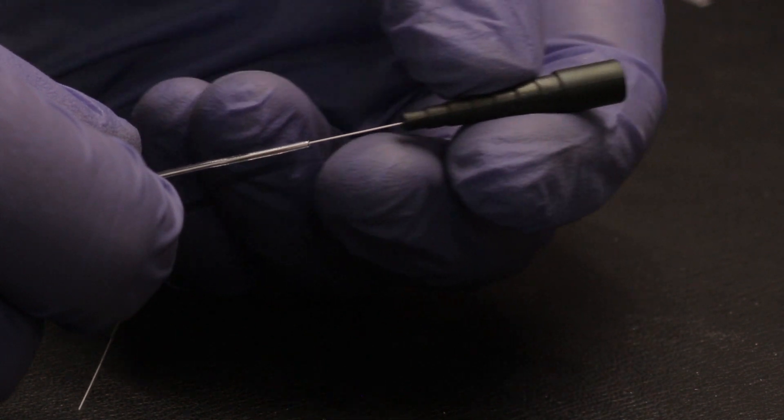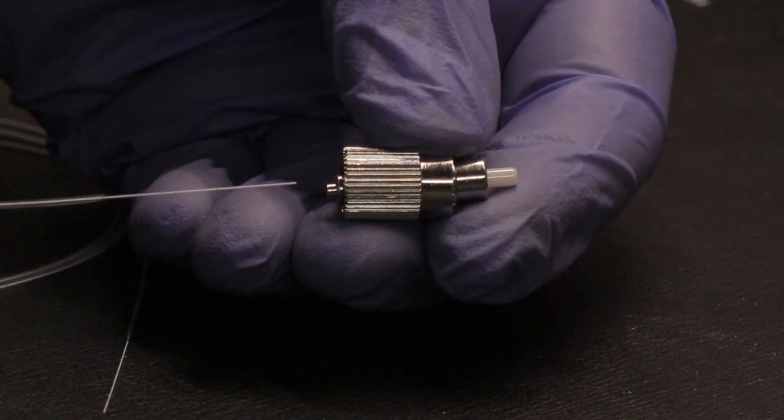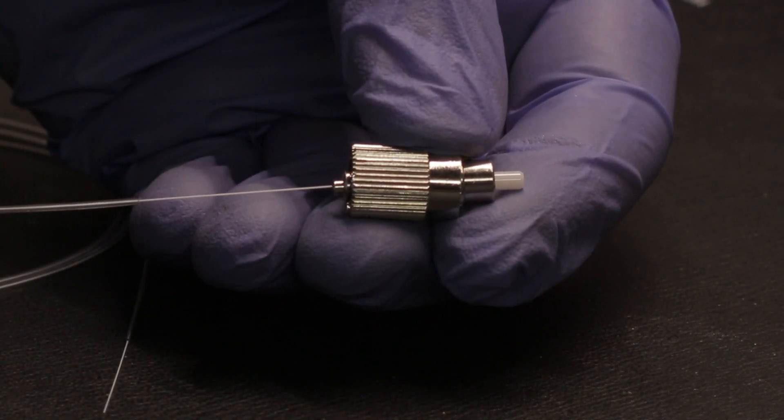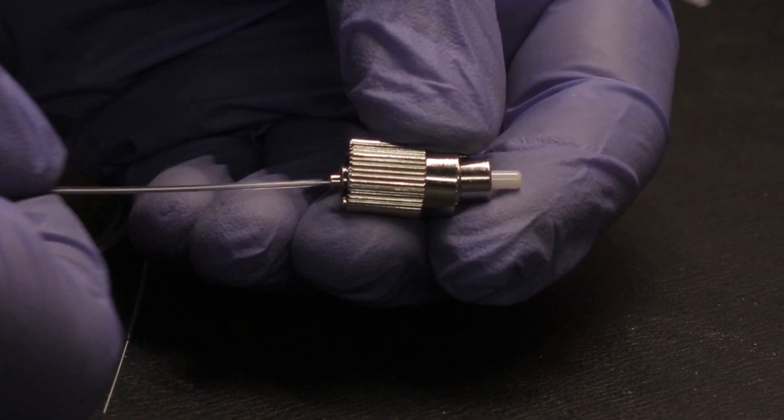Slide the boot onto the end of the laser wire. Next, feed the wire through the FC connector, making sure it feeds through smoothly.